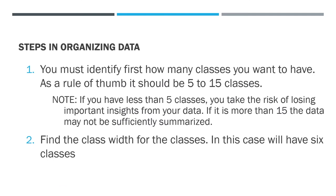Let's proceed to the specific steps. First, you need to identify how many classes you want to have. As a rule of thumb, it should be from 5 to 15 classes. If you have fewer than 5 classes, you risk losing important insights from your data. If it's more than 15, the data may not be sufficiently summarized — it becomes too detailed with no useful generalization as to what the data is actually showing you. So you want to be between 5 and 15.